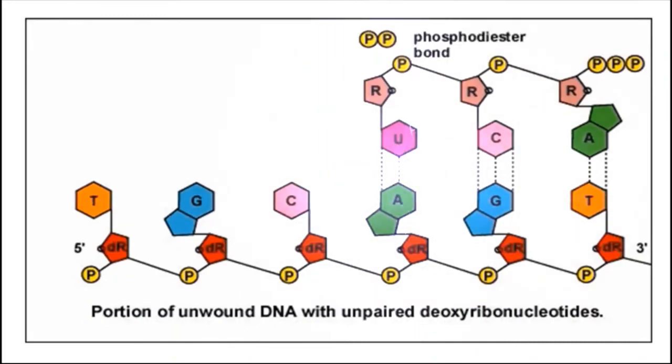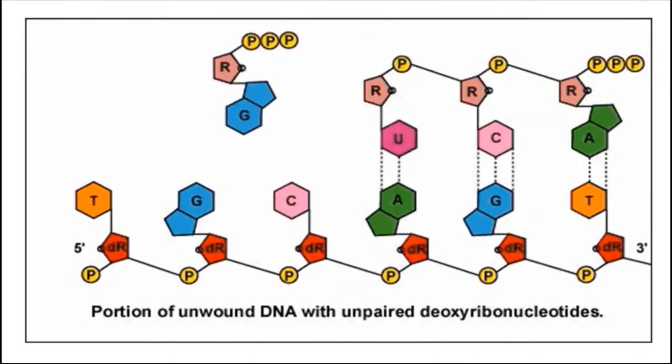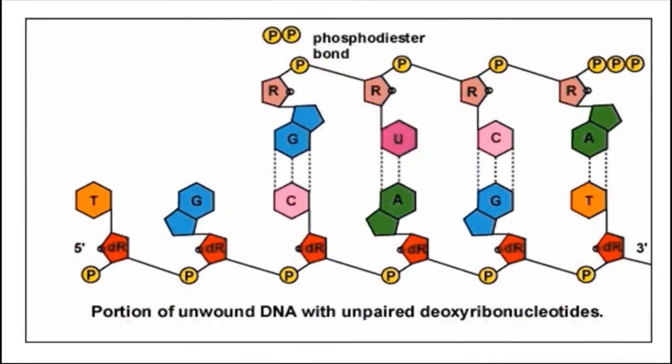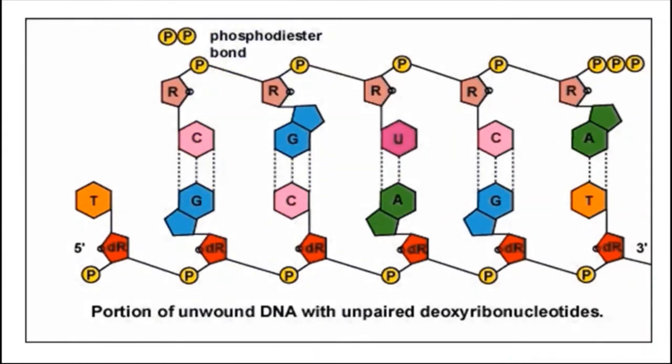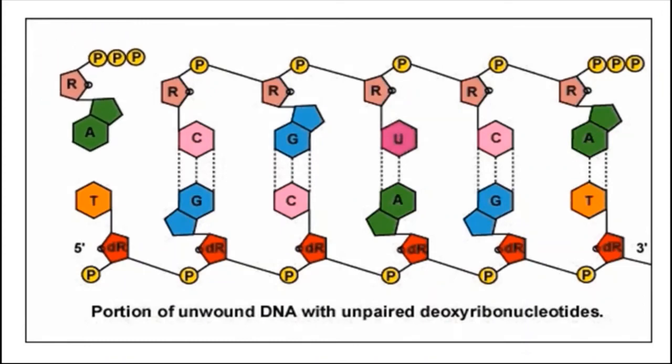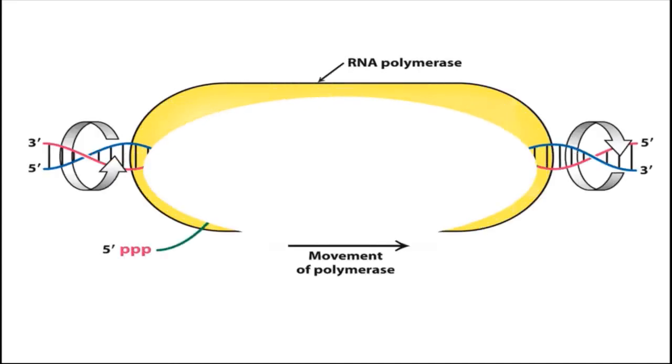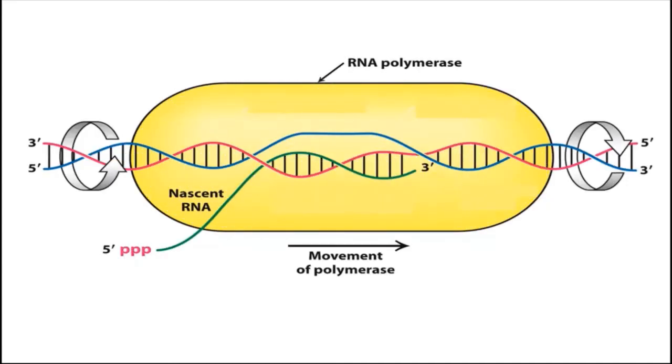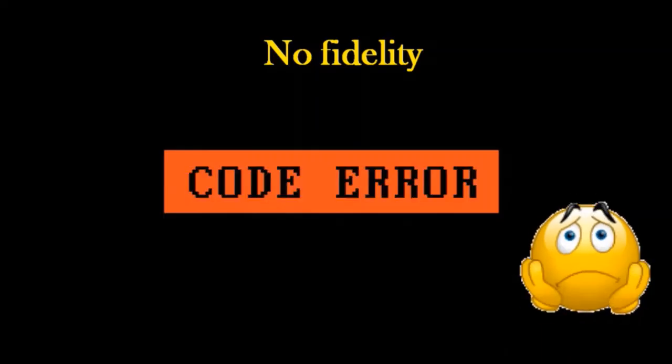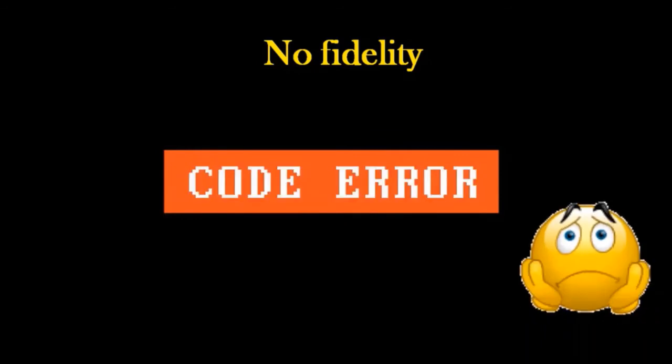Thus, adenine in the DNA is transcribed to uracil in mRNA, thymine to adenine, guanine to cytosine, and cytosine to guanine. As the RNA polymerase moves on the DNA template, the DNA helix unwinds downstream and rewinds at the upstream area.